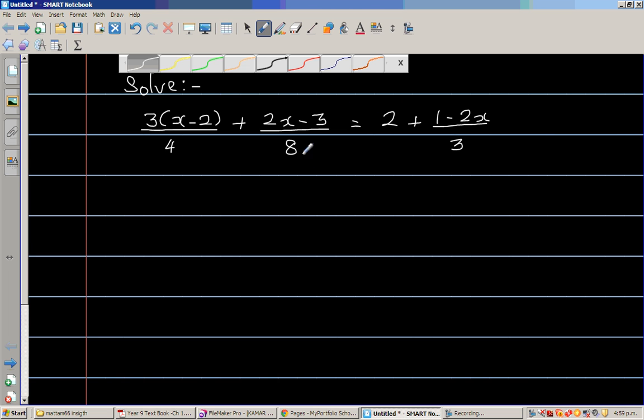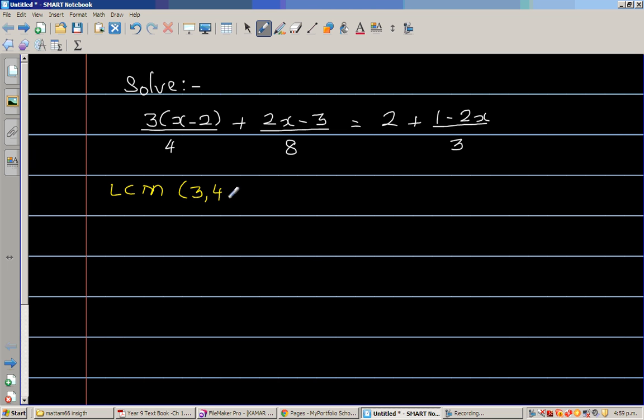The first thing that we are going to do is we're going to find LCM of the denominators. So the LCM of 3, 4 and 8 is 24 because 3 goes in 24 eight times, 4 goes in 24 six times and 8 goes in 24 three times. So this is the least common multiple.